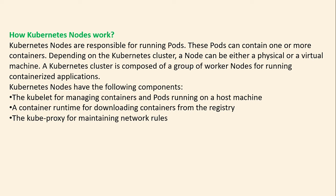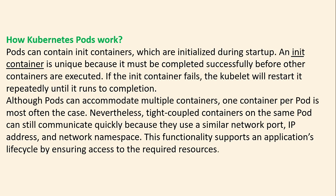A node can be either a physical or a virtual machine. A Kubernetes cluster is composed of a group of worker nodes for running containerized applications. Kubernetes nodes have the following components: the kubelet for managing containers and pods running in a host machine, a container runtime for downloading containers from the registry, and the kube-proxy for enforcing network rules.